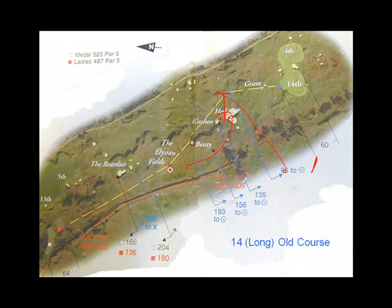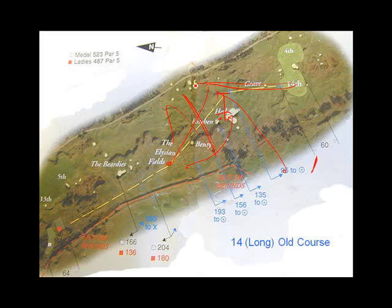The best line — the caddy line — is to avoid Hell Bunker completely. Play your drive aiming at the tower I'm going to show you, and then play your second shot basically into the fifth fairway. That's a bit odd because people are coming up the fifth fairway, but the double greens also give you double fairways, so the fairways are wide. Coming in from the left is a much easier shot, so some strategy like we talked about from the first — this is a very strategic golf hole.